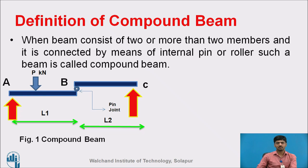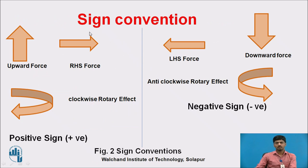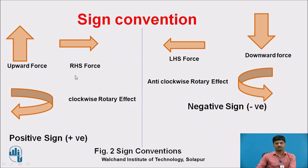How do we calculate the reactions for this particular beam? Sign conventions are very important before solving any problems. All vertical upward forces are positive; all vertical downward forces are negative. All right-hand side forces are positive; all left-hand side forces are negative. Clockwise rotary effect is positive; anti-clockwise rotary effect is negative.